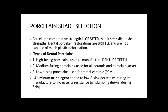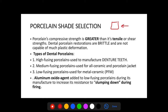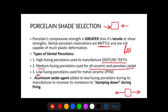Porcelain's compressive strength is greater than its tensile or shear strength, and it is brittle under small thickness — hence the use of a shoulder finishing line to give it enough room. There are three types of dental porcelain: high fusing (used for denture teeth), medium fusing (for all-ceramic and porcelain jackets), and low fusing (for metal-ceramic). Aluminium oxide is added to low fusing porcelain to provide resistance to slumping during firing.